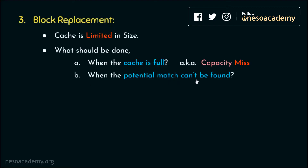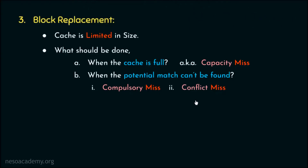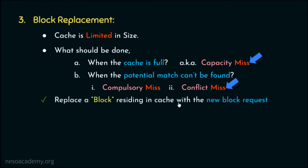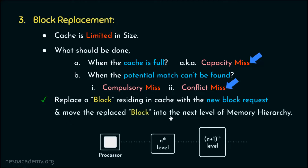The second question is: what should be done when the potential match can't be found? This can happen in two scenarios. A compulsory miss means the block has never been accessed yet. A conflict miss means the location where the block should reside is already occupied by another block. In these cases, we replace a cache block and move it to the next level of the memory hierarchy, making space for the newly requested block brought from the n+1th level.